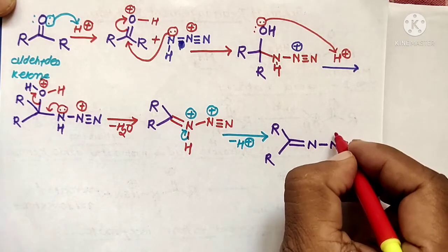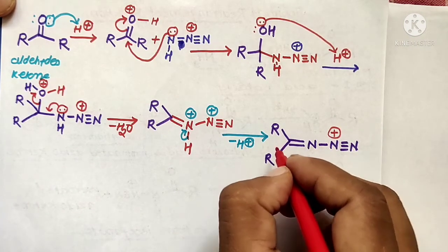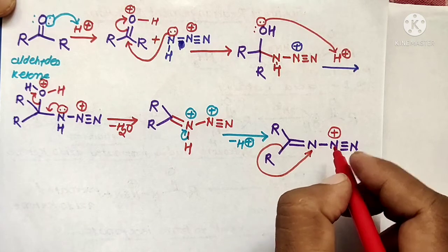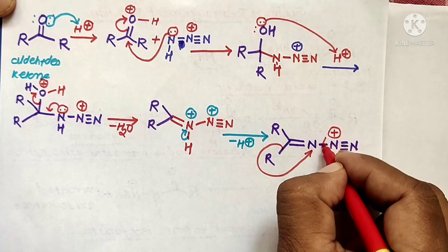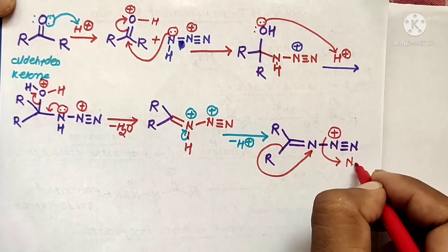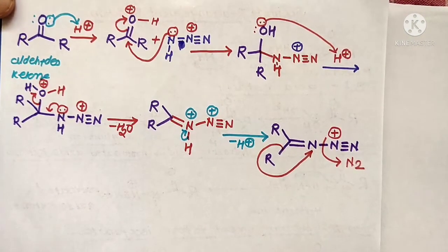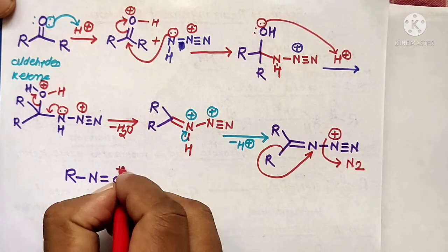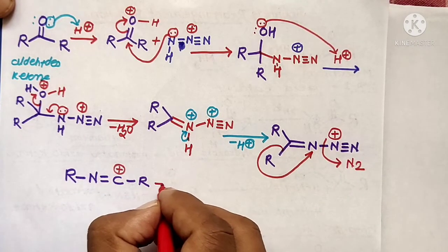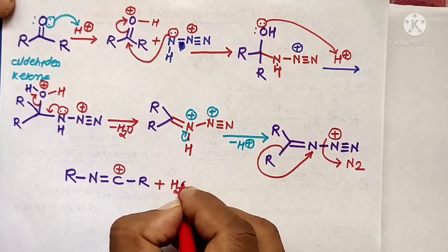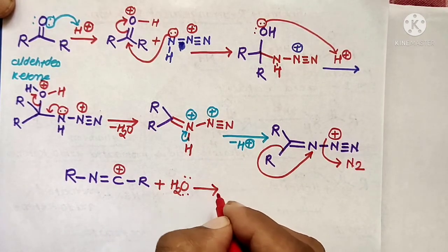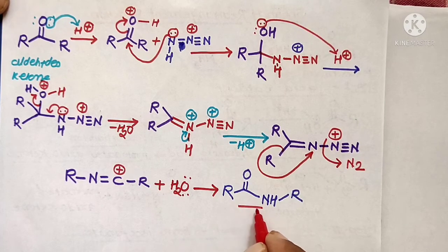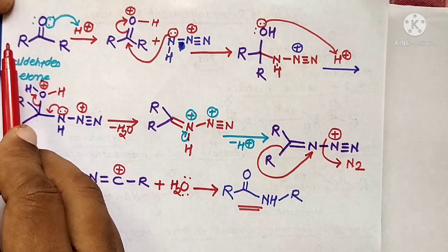In the next step, the nitrogen carries a positive charge and rearrangement takes place. The R group migrates toward the nitrogen atom, and this group is eliminated along with N₂ gas, forming a carbon-containing intermediate with a positive charge on carbon. This positively charged carbon reacts in the presence of a nucleophile like water to form the product of this reaction with carbonyl compounds as substrates.